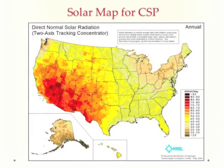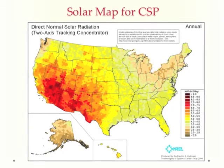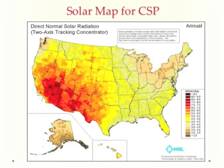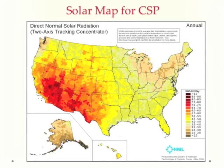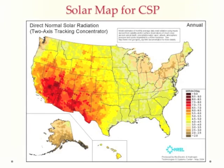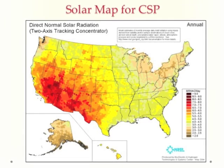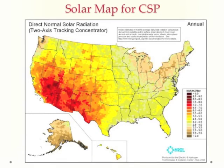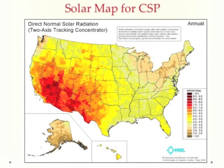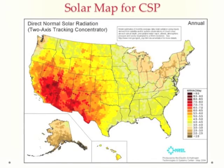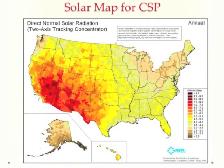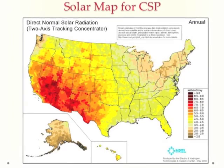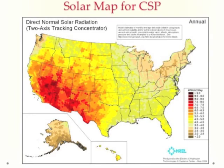This need for clear skies for CSP is shown in the solar map for CSP. The areas with the best opportunity for concentrating solar power are the desert southwest — Southern California, Arizona, New Mexico. These are the best locations; the cloudy northeast is not very suitable.